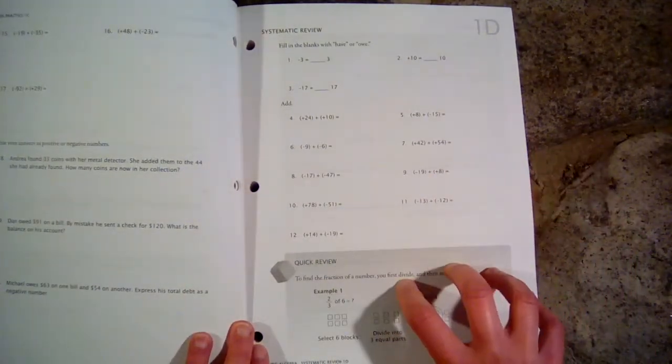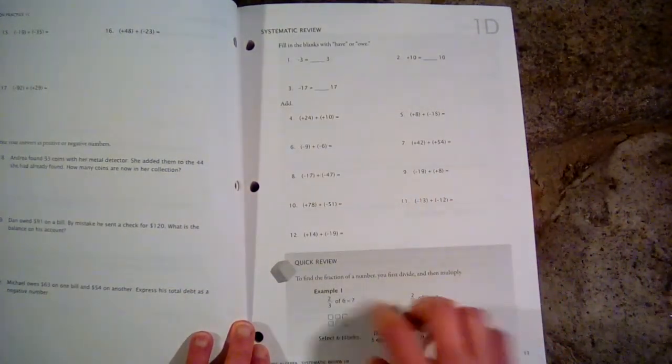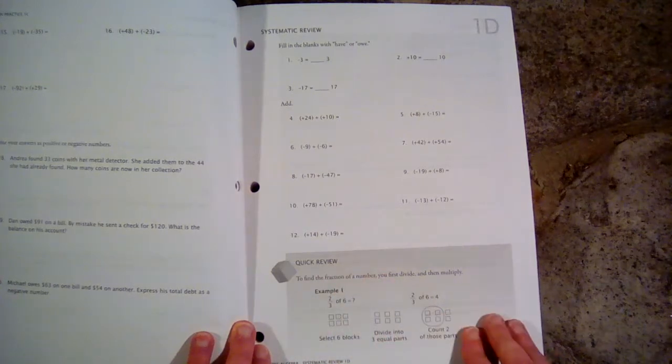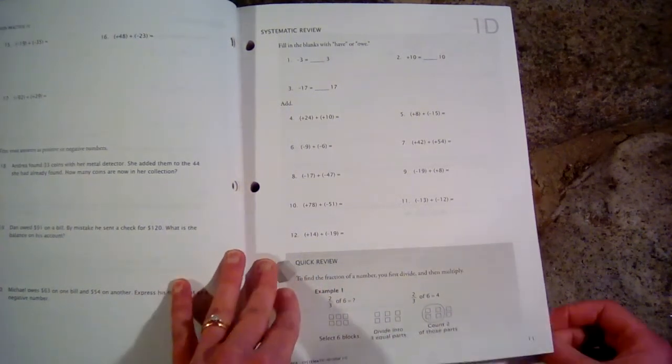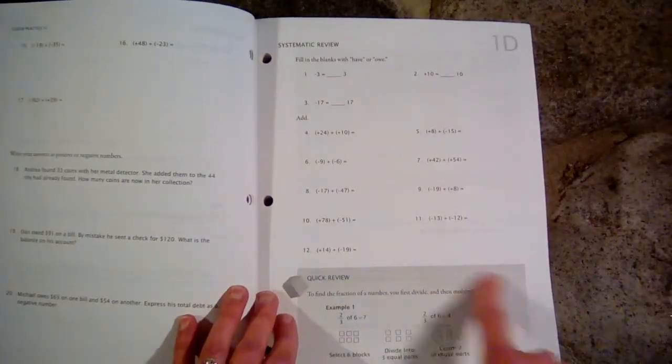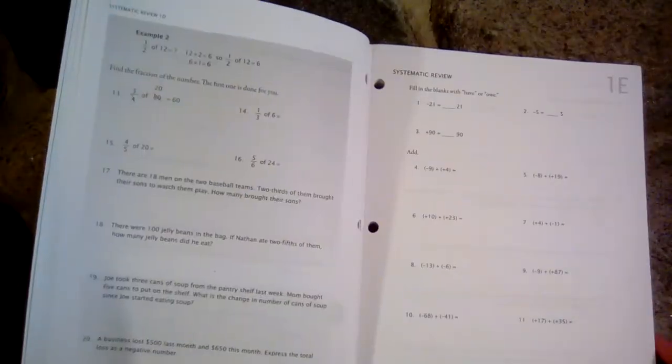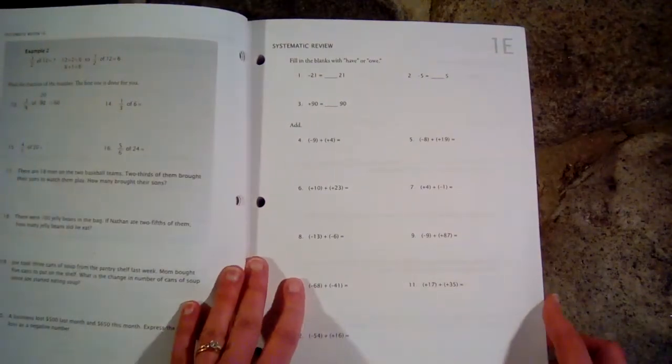So in the D, E, and F systematic review pages, there is usually a quick review from a previous book. So that is a good reminder of how to do something that they have learned before.